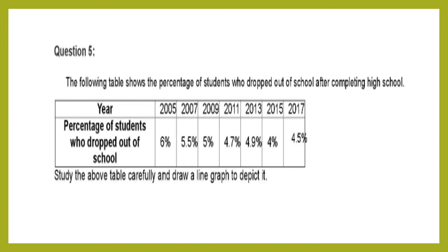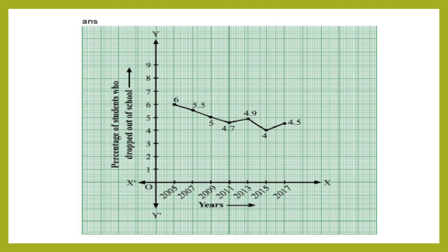The following table shows the percentage of students who dropped out of school after completing high school. Year and dropout percentage: 2005: 6%, 2007: 5.5%, 2009: 5%, 2011: 4.7%, 2013: 4.9%, 2015: 4%, 2017: 4.5%. Study the above table carefully and draw a line graph to depict it. Year is taken along the x-axis and percentage of students who dropped out along the y-axis. One division equals 1 unit.